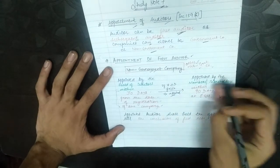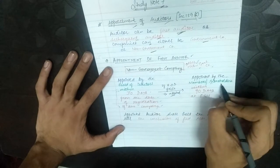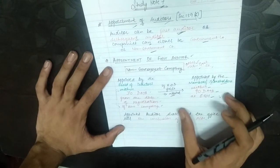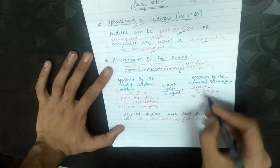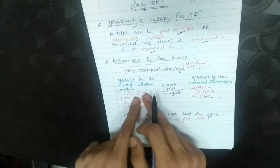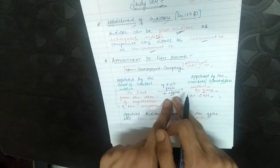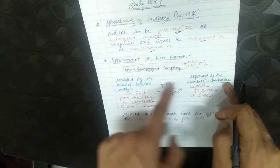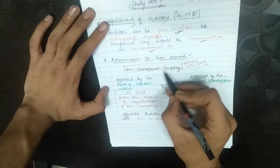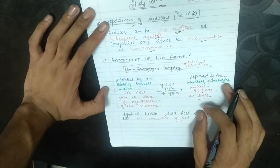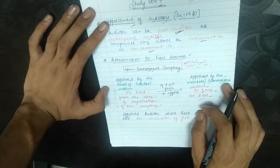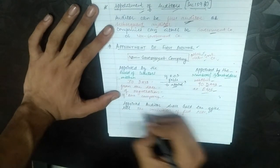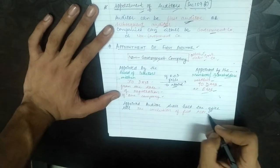If the Board of Directors fails to appoint the first auditor, then it is appointed by the members or shareholders within 90 days at an Extraordinary General Meeting (EGM). These 90 days are counted after the 30-day period expires. The appointed auditor shall hold office till the conclusion of the first AGM.